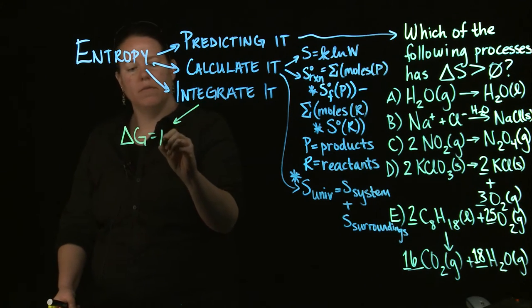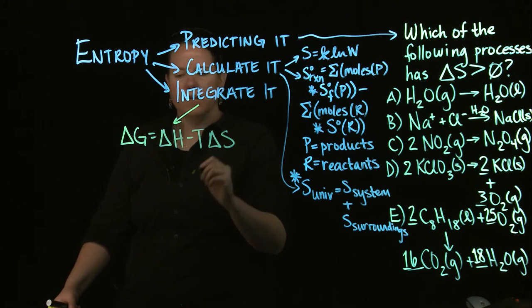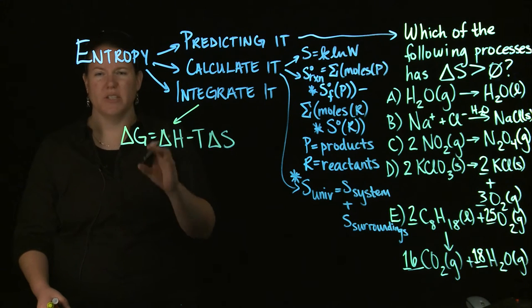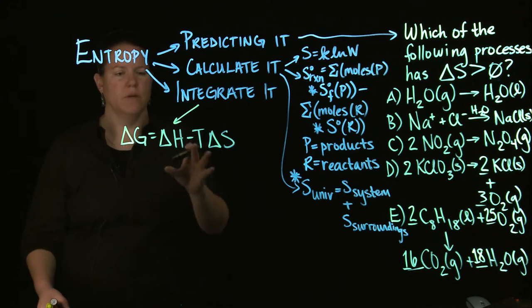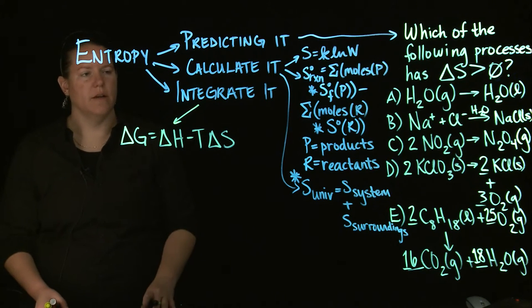The most common way that this is integrated into what we really want to know about is with the delta G equation. So I call this the delta G equation. It actually has a formal name, it's like the Helmholtz-Gibbs equation, something like that. You don't need to know that. You just need to know what it looks like, and there it is.